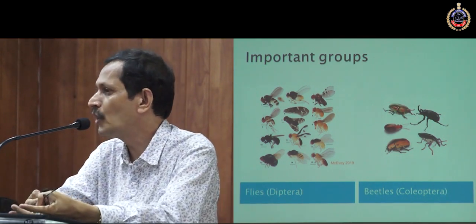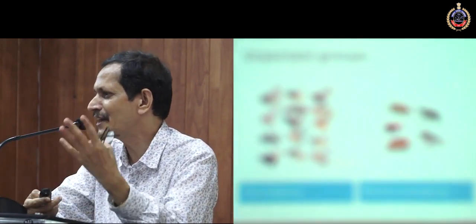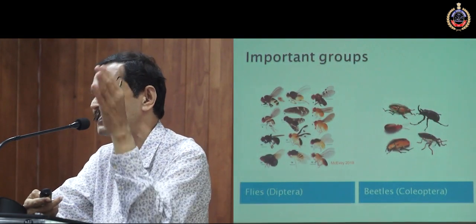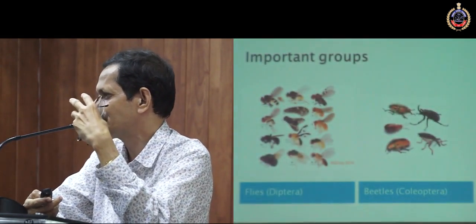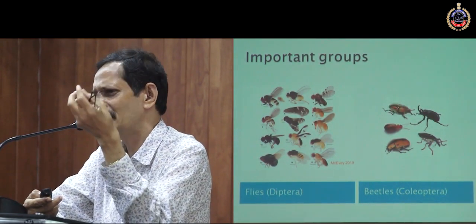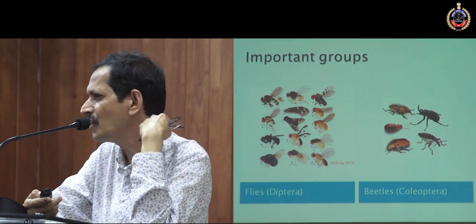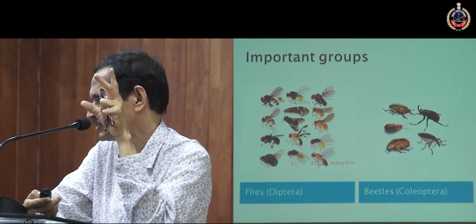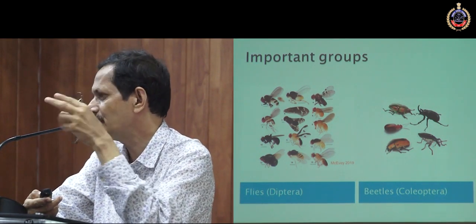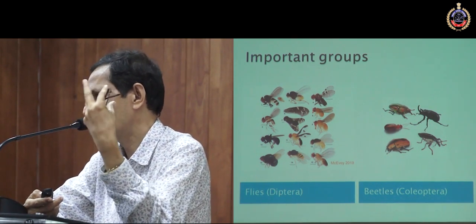Beetles are otherwise known as Coleoptera. 'Coleo' means sheath — sheath-like wings. Their fore wings are modified as protective structures known as elytra. They are very hard and not used for flying; only hind wings are used for flying. It is very difficult to kill them, they are so hard.